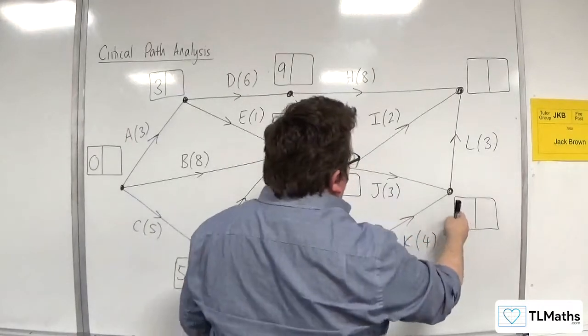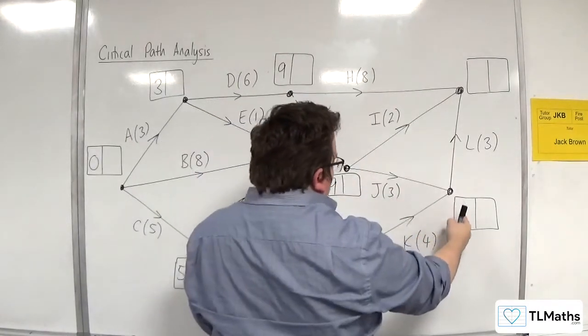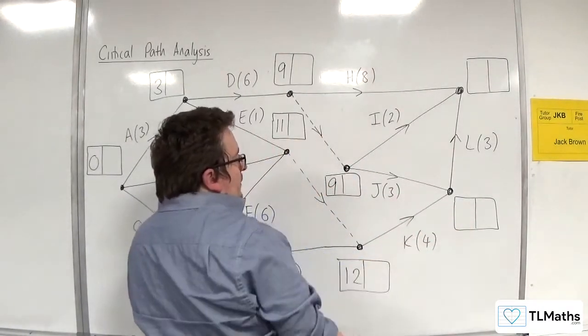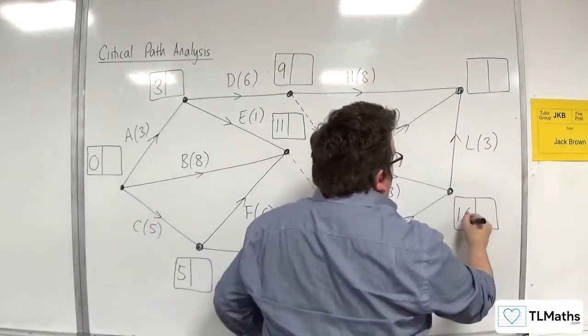Right, now this one. So 9 plus 3 is 12, or 12 plus 4 is 16. So we take the larger, so 16.